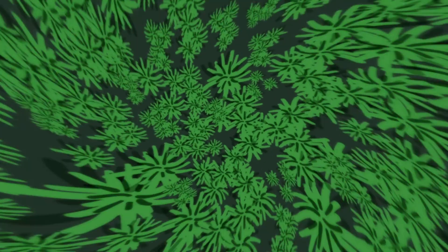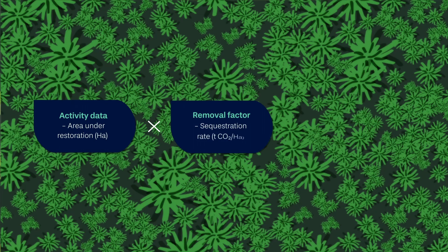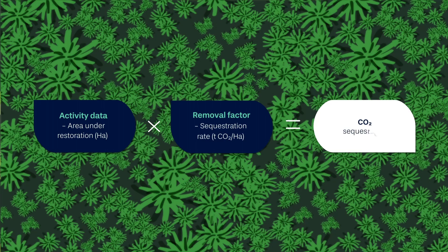The estimate is obtained by multiplying the hectares reported in Indicator 5 by the best removal factor, which indicates the tons of carbon dioxide sequestered per hectare per year by a given restoration activity.